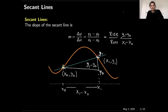To calculate the slope of the secant line, we first find points A and B where the line intersects the curve, and then we subtract the y-values and divide by the difference of the x-values. So it is the difference of y-values divided by the difference of x-values.